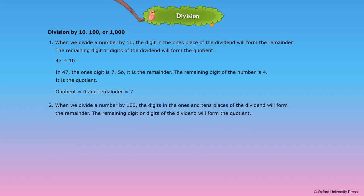Rule 2: When we divide a number by 100, the digits in the ones and tens places of the dividend will form the remainder, and the remaining digit or digits will form the quotient. For example, 345 divided by 100: quotient is equal to 3 and remainder is equal to 45.